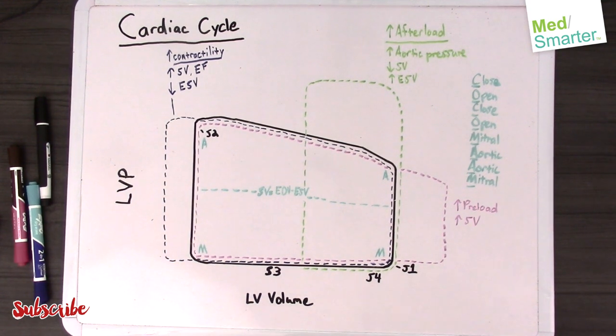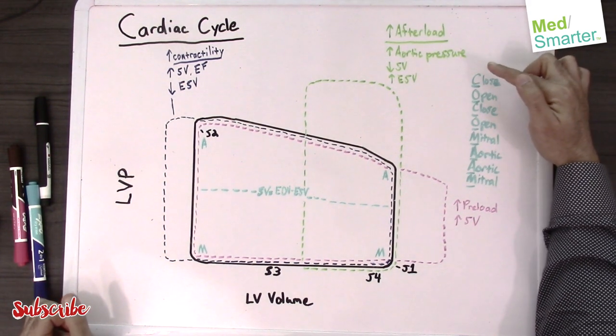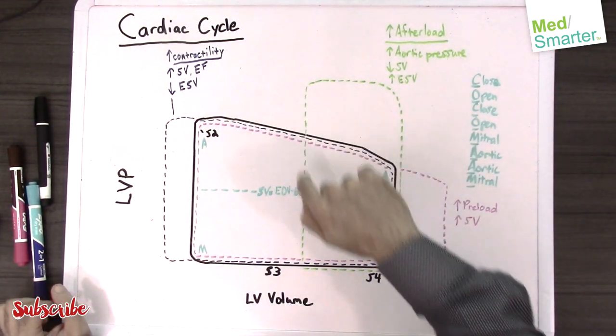With this increased afterload scenario, now we're going to have high aortic pressures. With high aortic pressures, this is going to decrease the stroke volume. This is demonstrated in the graph here via the green lines.